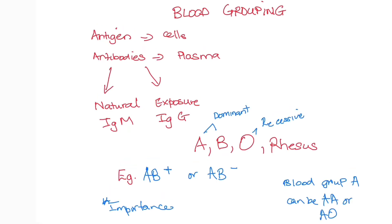It's also sometimes an indication of paternity, not directly but indirectly. For example, a mother cannot be O and a father A and the offspring be AB. In the cross, O with A can only give O or A, so there is no way you can get AB — there's no B in either A or O.